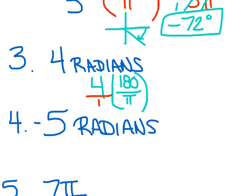So again, I'm going to make this a fraction. Multiply across the top and across the bottom. And 4 times 180 gets me 720 over pi.